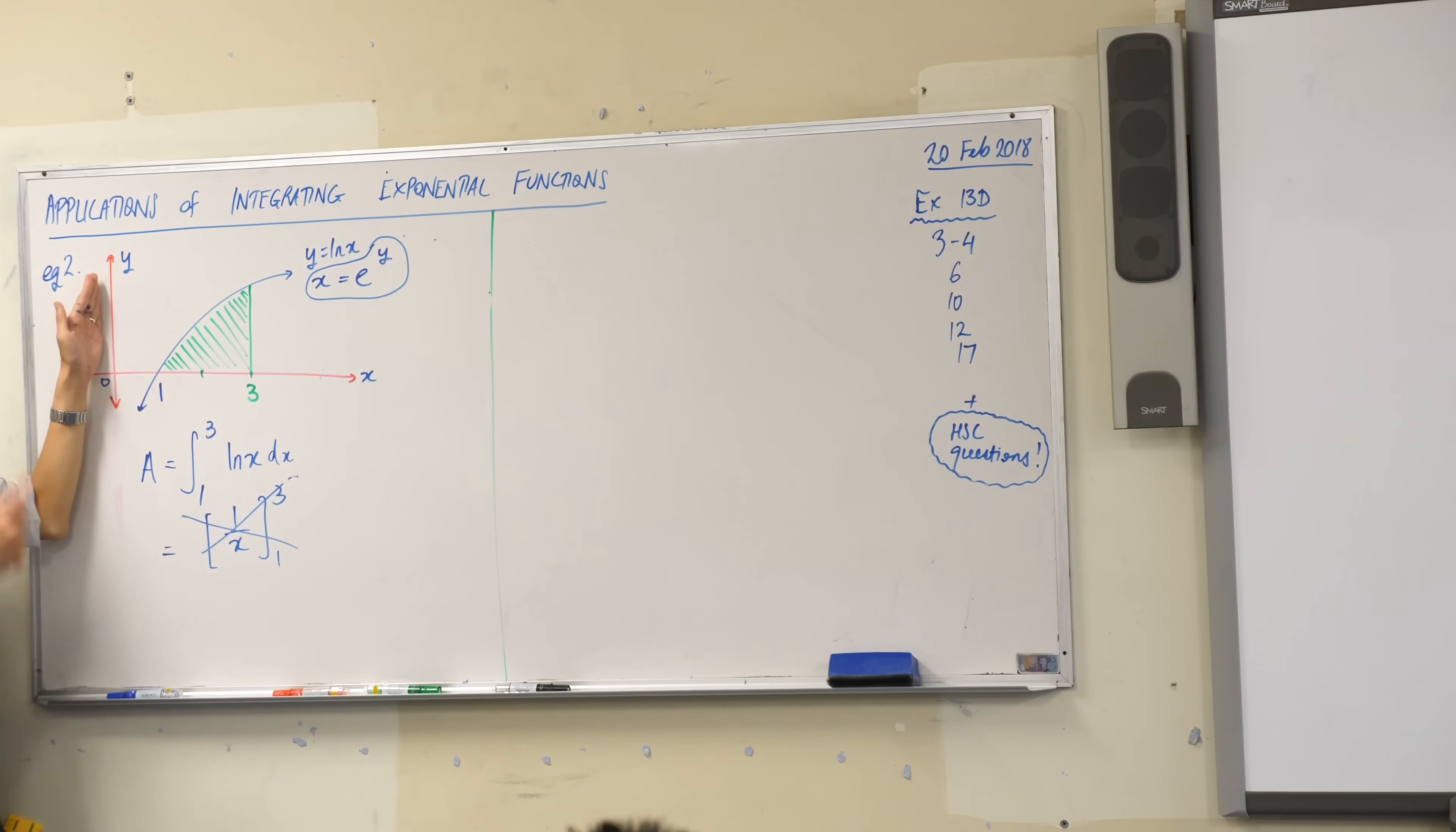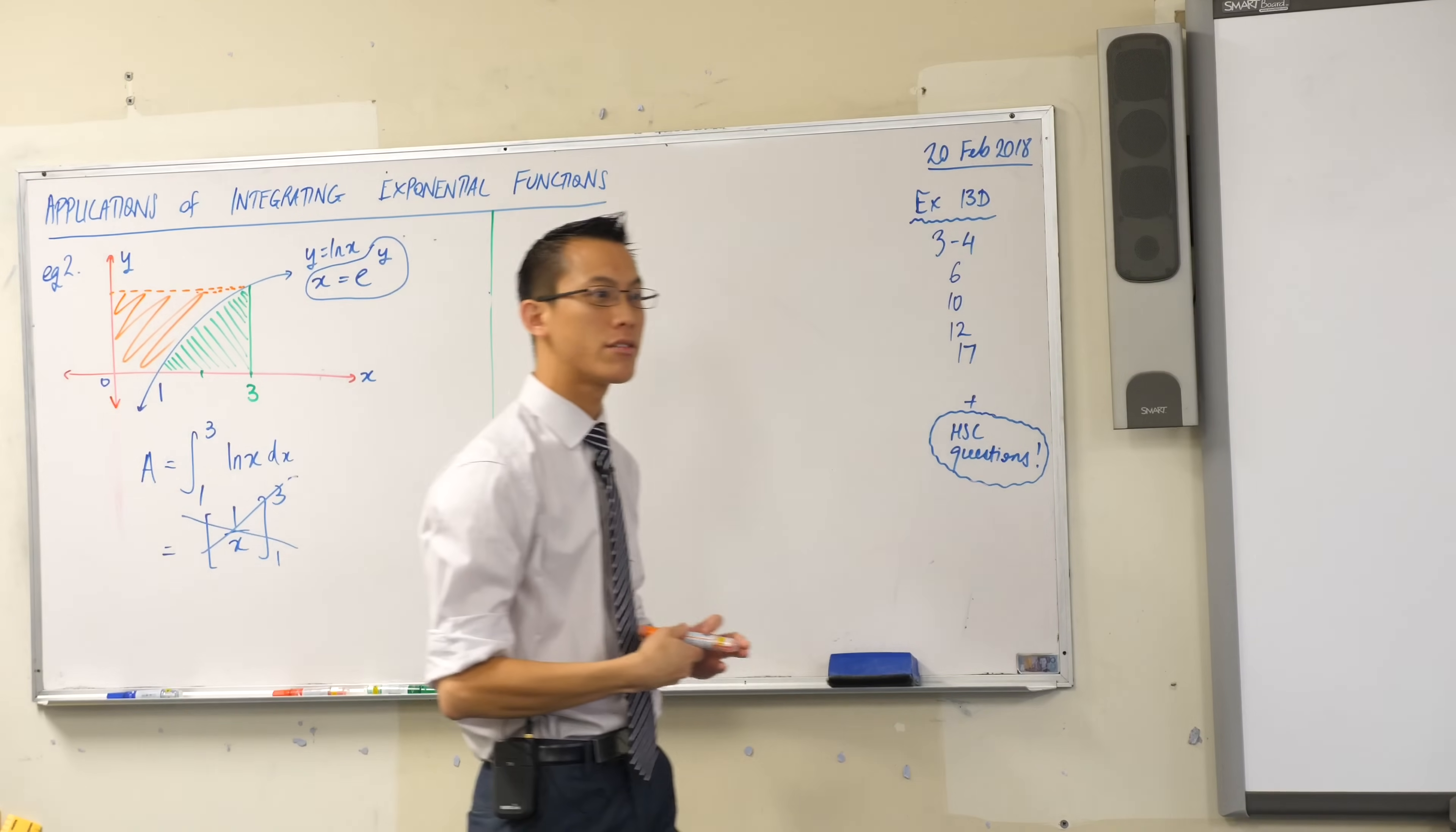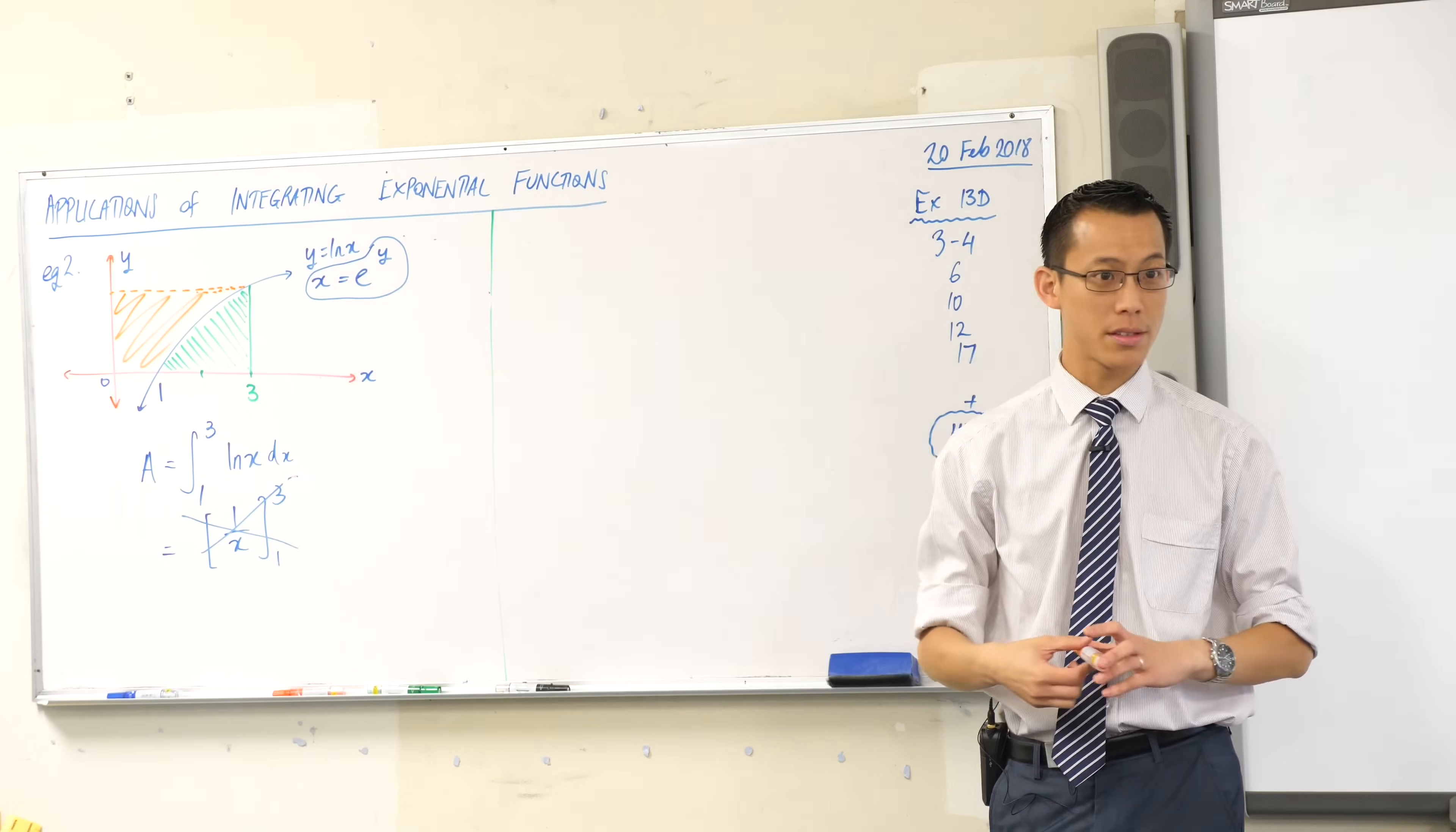So here's the y-axis over here. If you've got another color with you or if you want to cross hatch it in a different way, this guy over here is the area I will get if I integrate with respect to the y-axis, does that make sense?